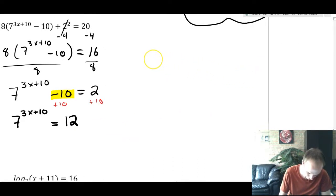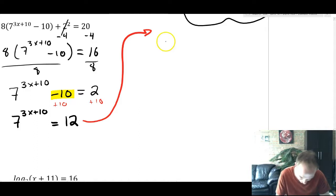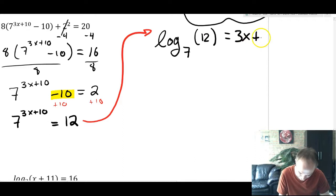Again, coming over here, we're going to change this into log form. So this is going to be the same as log base 7 of 12 = 3x + 10. That's that transition into logarithm form. And this is good, because now there's no exponents, there's no powers. There's this logarithm, but it's all isolated with x over here on this side, safely. So to solve this with algebra, we'll subtract 10 from both sides. And then after we subtract 10, we'll divide by 3.